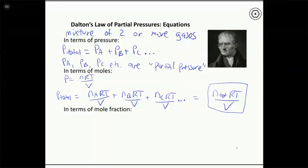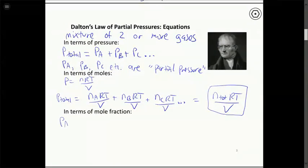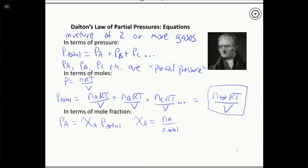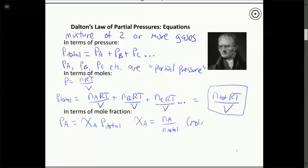A new parameter called mole fraction lets us calculate partial pressure. The partial pressure of gas A equals chi_A times the total pressure, where chi (χ) is the mole fraction — the moles of A divided by the total number of moles of gas. Mole fraction is unitless. We haven't seen it in other contexts yet; for us, it appears only in mixtures of gases.